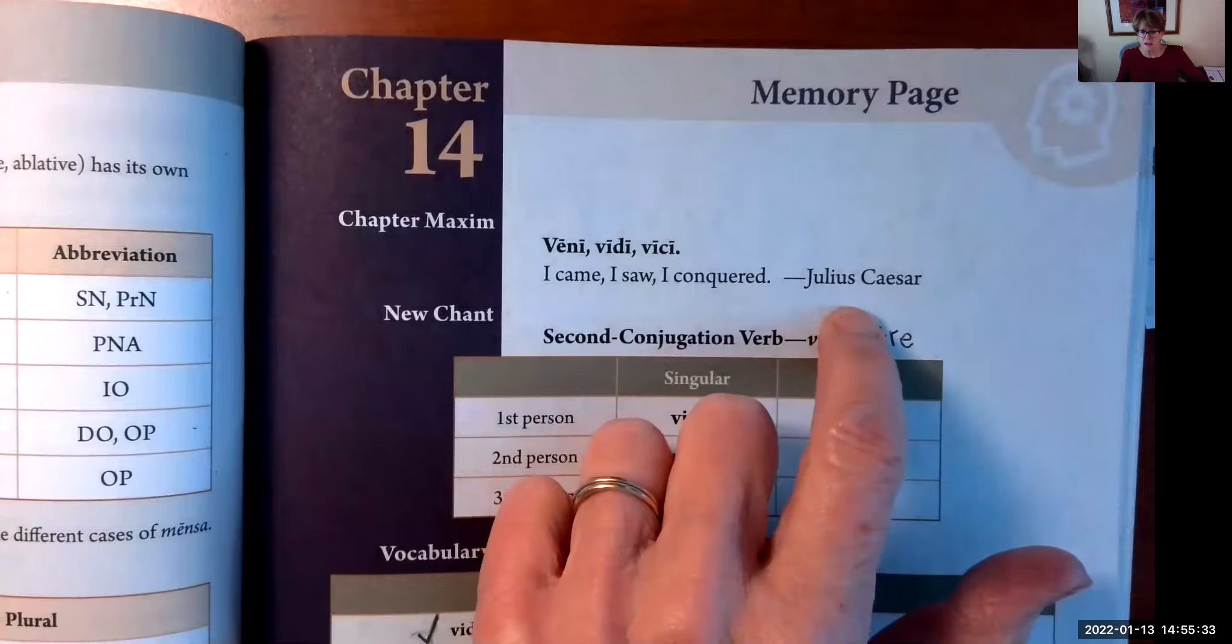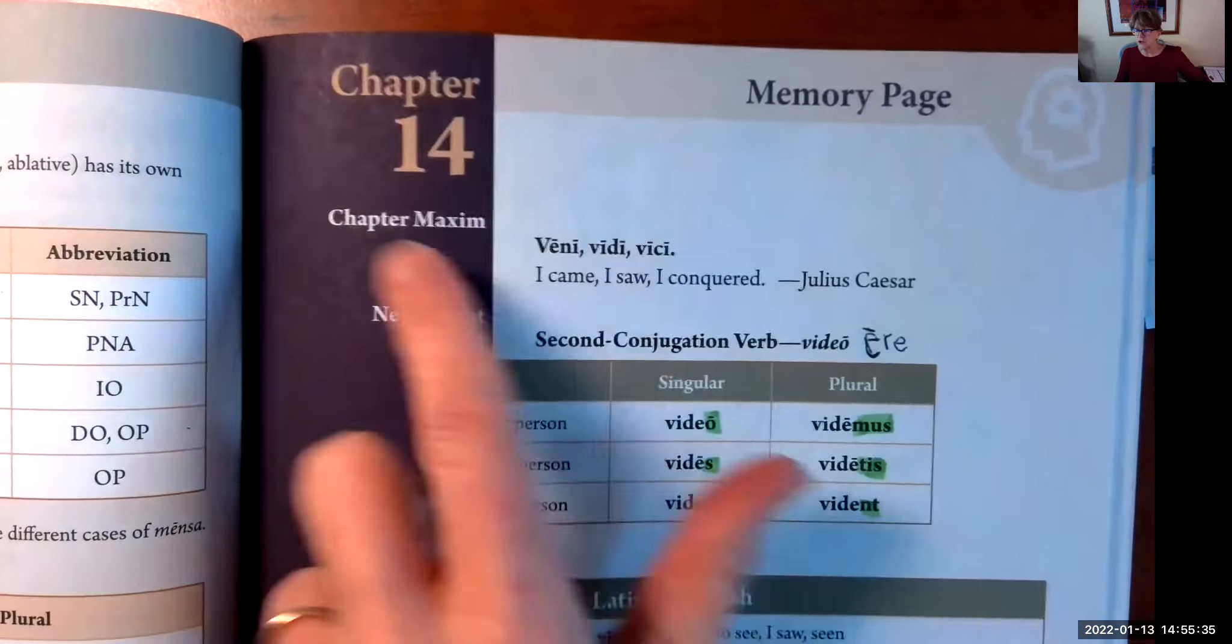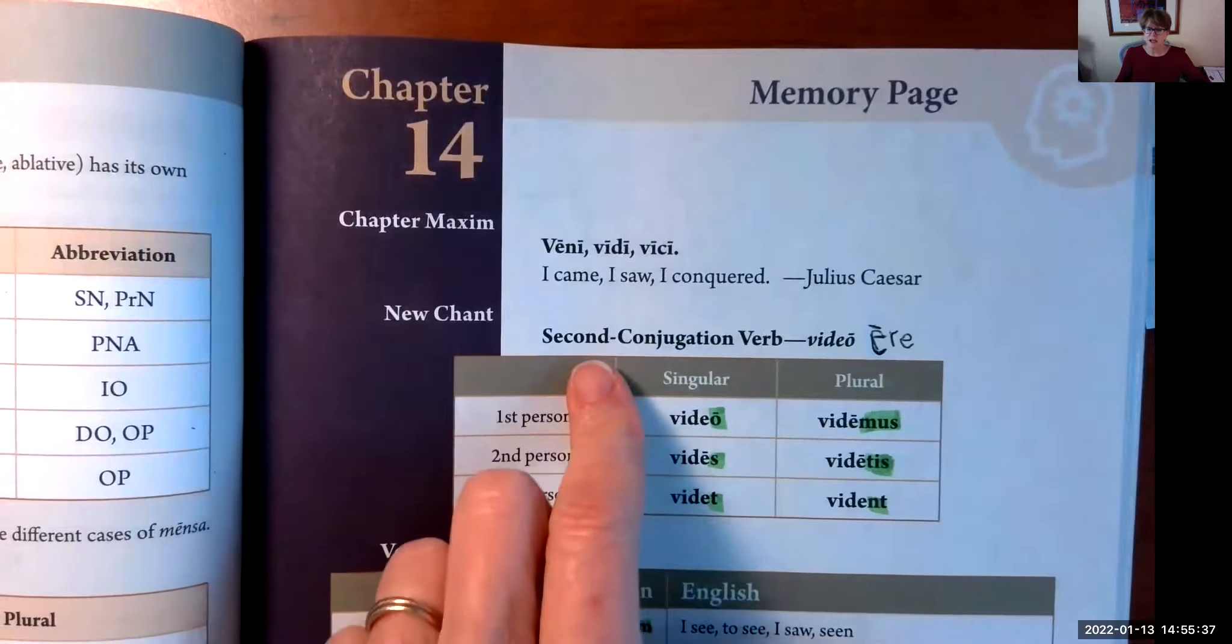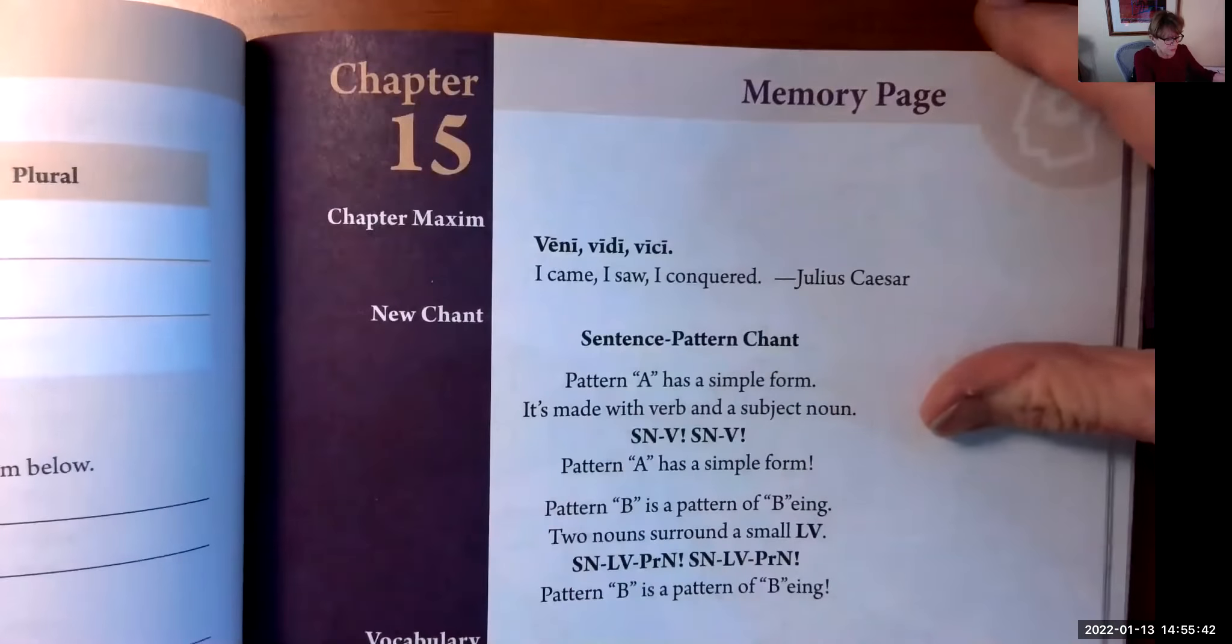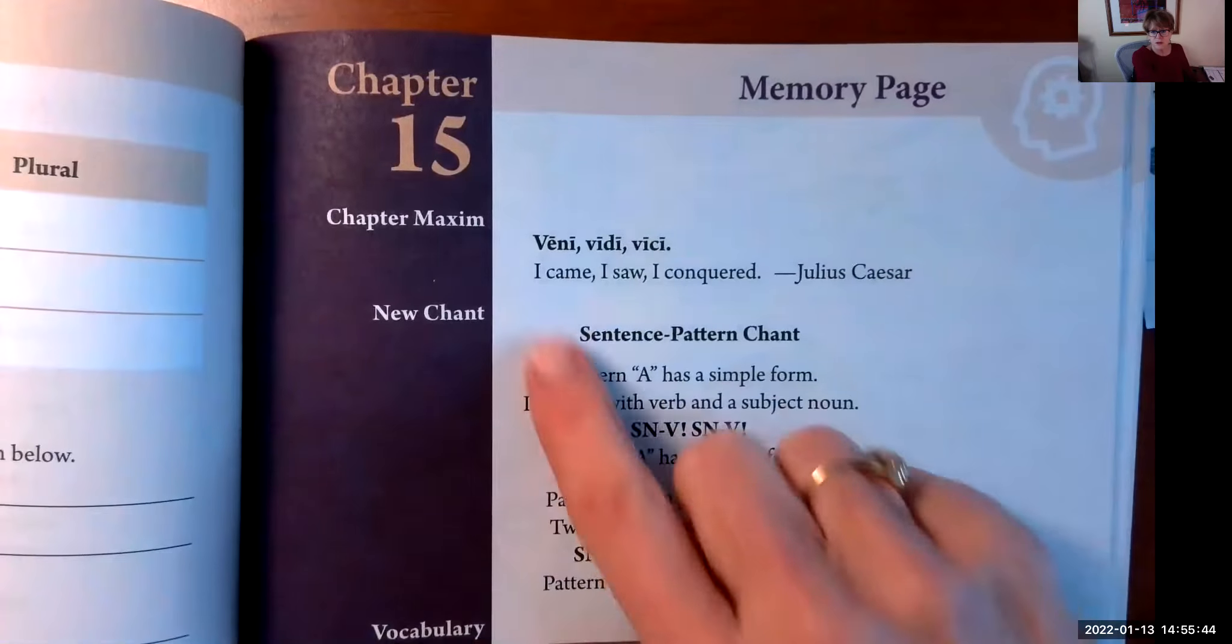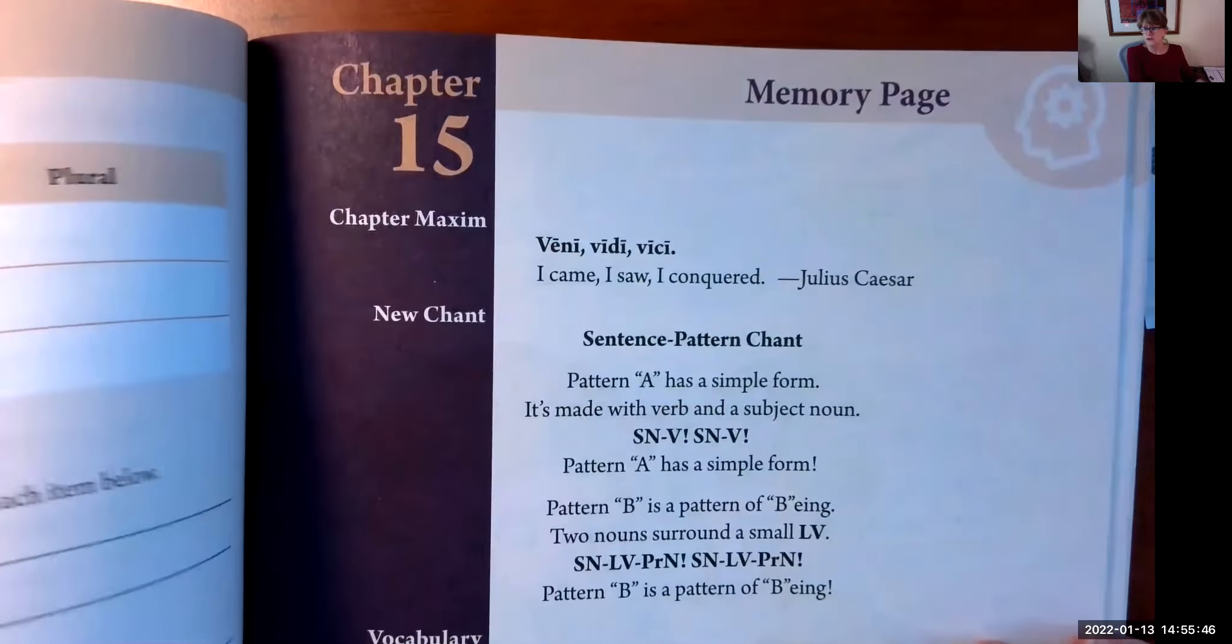Chapter 14 at the top, you'll see the chapter maxim: Veni, vidi, vici - I came, I saw, I conquered. Julius Caesar said this, and this will be your maxim for Chapter 14 and the next chapter.